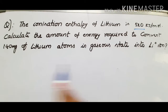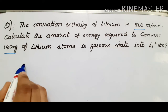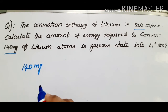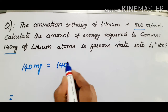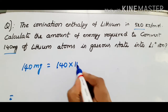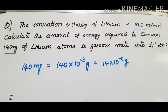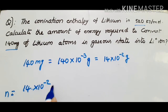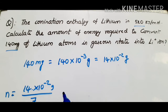First, calculate the number of moles from the given data. The weight of lithium is 140 mg, but the formula requires grams divided by grams-per-mole, so convert milligrams to grams: 140 mg × (1g/1000 mg) = 140 × 10⁻³ grams, which can be written as 14 × 10⁻² grams. Number of moles = (14 × 10⁻² g) ÷ 7 g/mol (atomic weight of lithium ≈ 7).